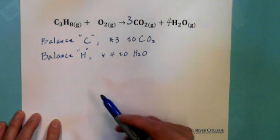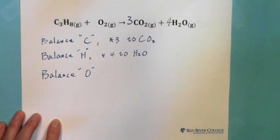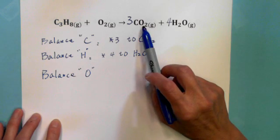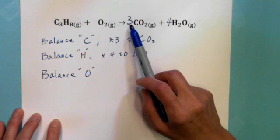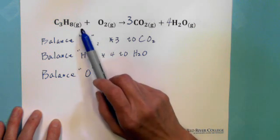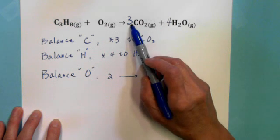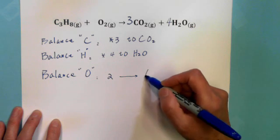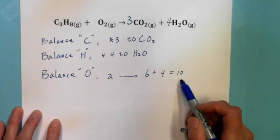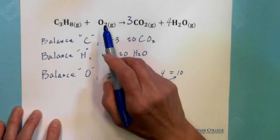Hydrogen is now balanced. The last step is balancing oxygen. After multiplying by three and by four, the oxygen count has changed. After the reaction: three times two is six oxygen from CO2, plus four times one is four oxygen from water — ten oxygen total. To balance from two to ten, we multiply O2 by five.